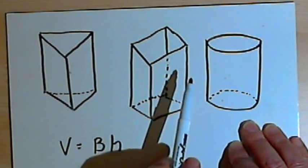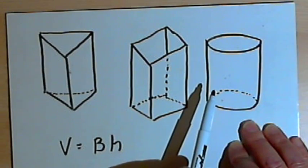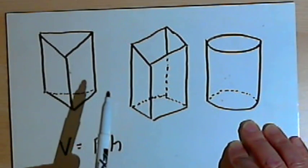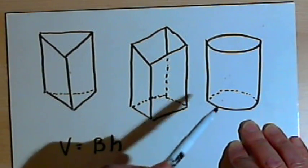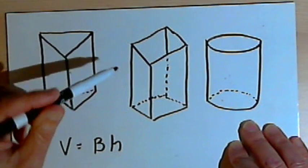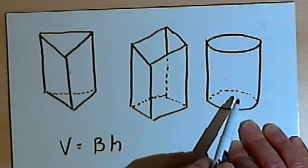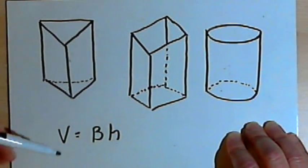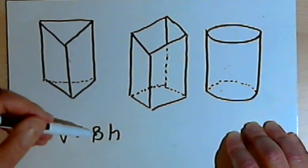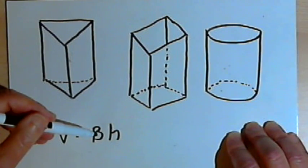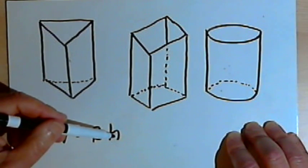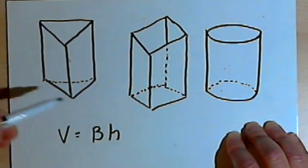Now to find the volume for each of these different figures we can use a separate formula for each one, but what I want to use is a general formula that will work for any prism and also for any cylinder. That formula is going to be that the volume equals the area of the base times the height. So let's apply that formula to a couple of different figures.